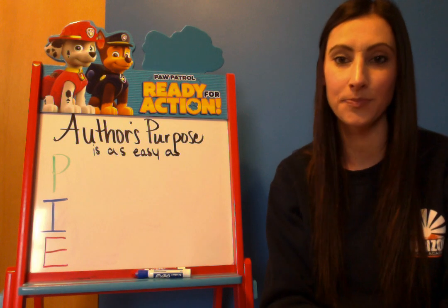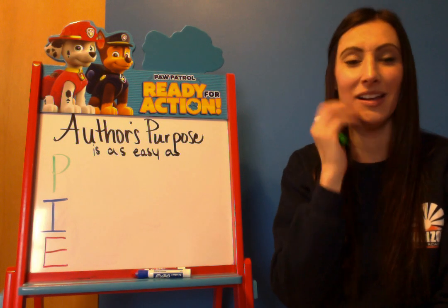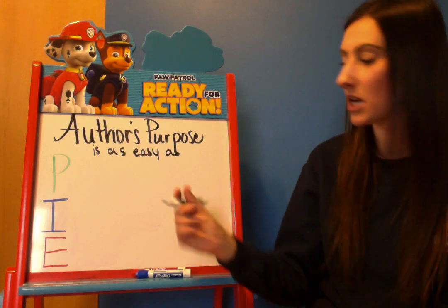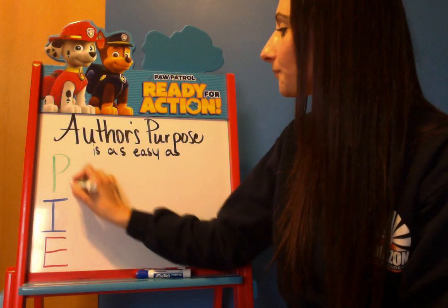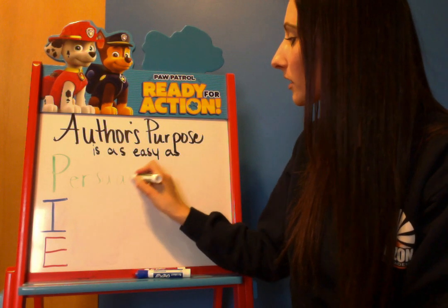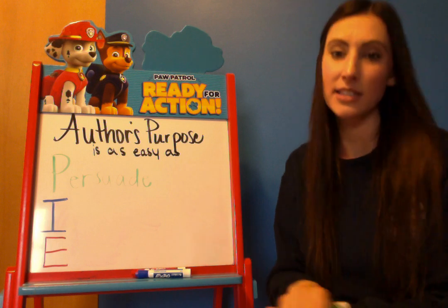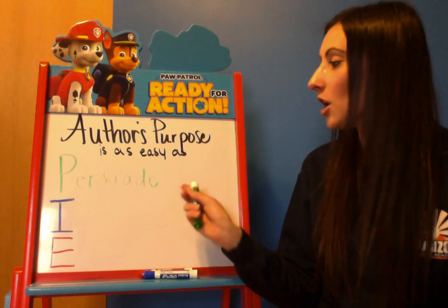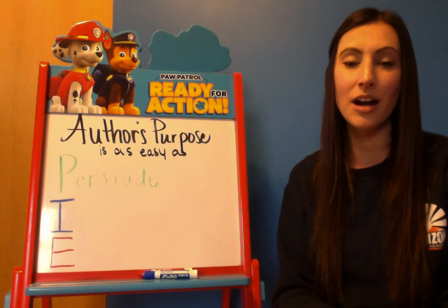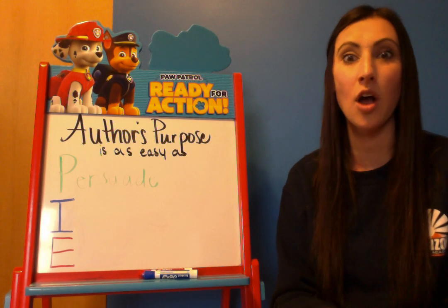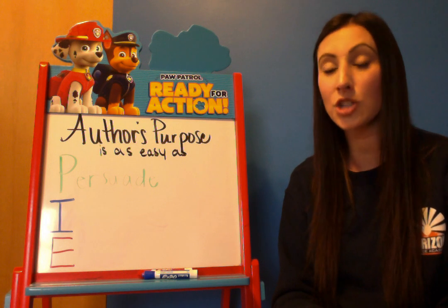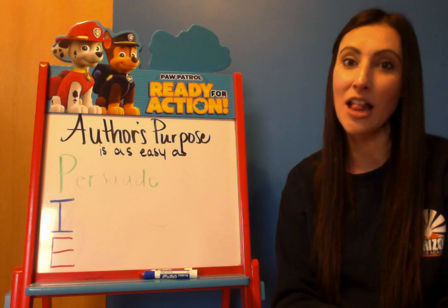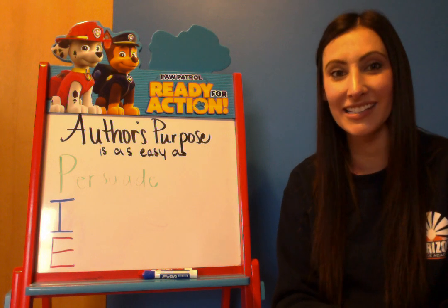What does P mean? P is that tricky word — persuade. Remember, persuade is where the author is trying to change your thought process, trying to change your opinion. For example, people who don't believe in aliens — everybody's entitled to their own opinion.